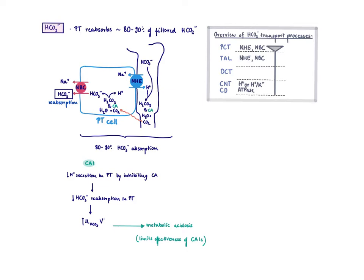Carbonic anhydrase inhibitors are now rarely used as diuretics, and the reason is that metabolic acidosis is their side effect. When you have acidosis, there are many protons available, and the NHE will no longer depend on protons made by carbonic anhydrase — it will just use whatever is available from the acidosis. Therefore, at some point the metabolic acidosis limits the efficacy of carbonic anhydrase inhibitors dramatically.